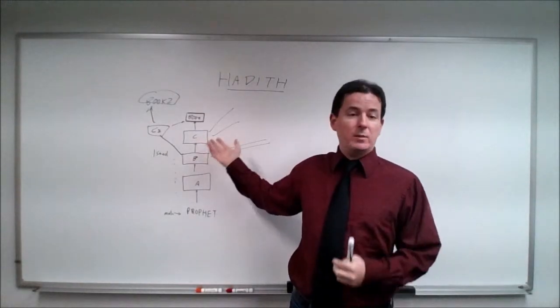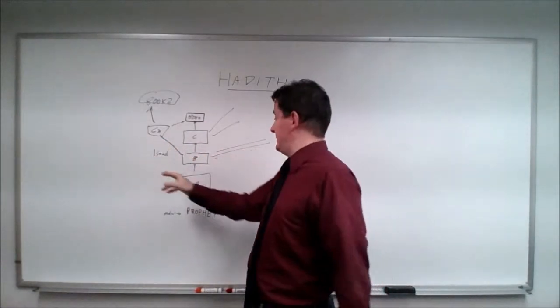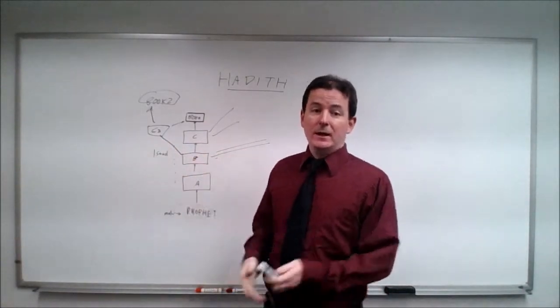Like C is considered a partial common link. And then you would triangulate it with C2 to find out what B had to say.